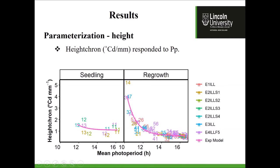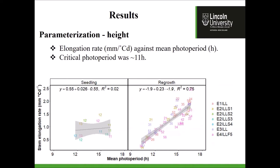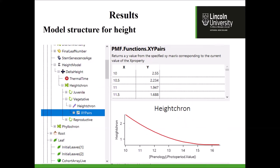Taking the inverse of height crown gives stem elongation rate in millimeters per degree Celsius-day. Plotting that against photoperiod gives a linear regression indicating a critical photoperiod of about 11 hours. This function is then implemented into the Lucerne model for height crown. Looking at the reproductive phase, the null hypothesis was that height crown is not affected by phenological development stage. However, for the 84-day cutting treatment, when crops start flowering, there is a significant change in the slope of height against thermal time.